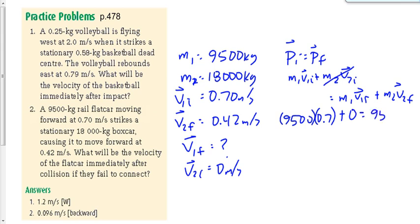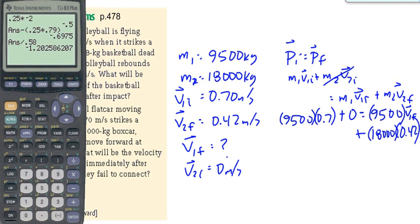M1 is 9,500 again. V1f is that's what we're looking for, plus M2, 18,000, times V2f, 0.42. Everything is positive here. So we're going to say 9,500 times 0.7, and we're going to subtract brackets 18,000 times 0.42. Gives me a number on the left-hand side, negative 910. Divide that by 9,500, and we end up getting negative 0.095. That's not the answer. What have I done wrong there?